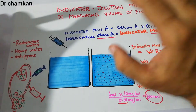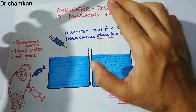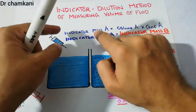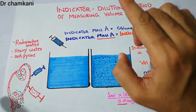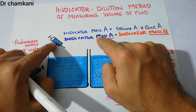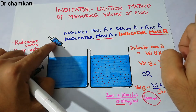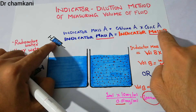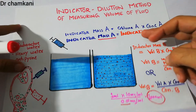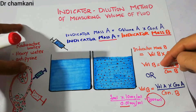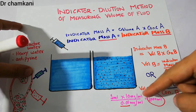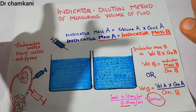In the indicator dilution method, we take a small indicator and we know its volume, concentration, and mass. We also know that this indicator is going to be properly distributed and its mass before injection remains the same after injection. By using, rearranging, and putting values into these equations, we can easily calculate the volume of water in the body.